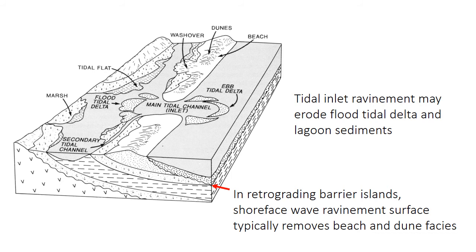Just like in wave-dominated estuaries, transgressive barrier islands can generate ravinement surfaces both in the tidal inlet — the erosive-based tidal channel — and in the shore-face setting. The tidal inlet ravinement will erode through flood tidal deltas, lagoon, or back barrier tidal flat sediments, or potentially even deeper into the section. The shore-face wave ravinement nearly always removes the beach and aeolian dune facies — barrier islands often have aeolian sand dunes on top, but they almost never make it into the rock record due to shore-face erosion.